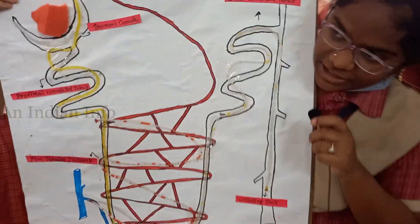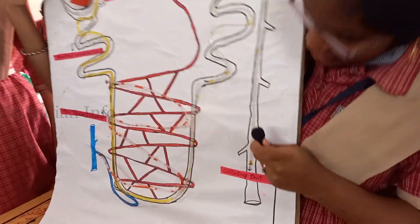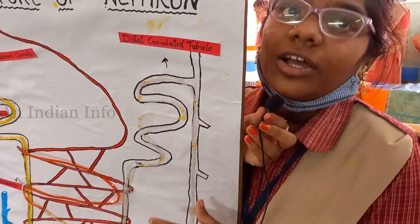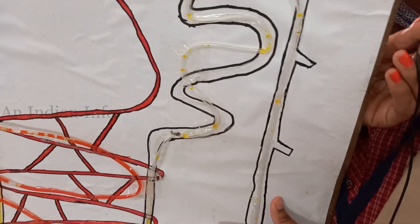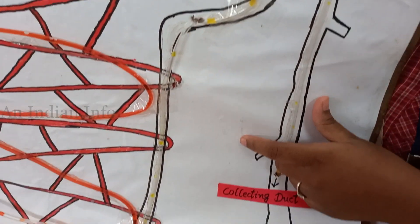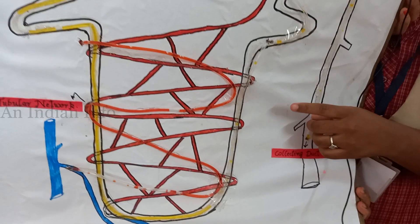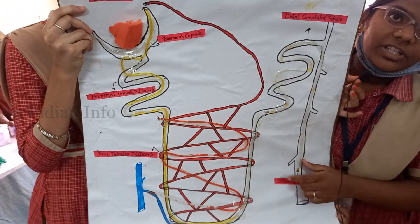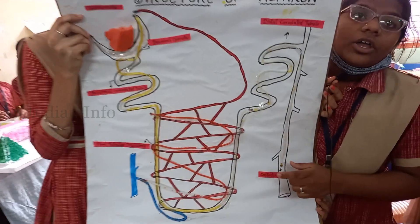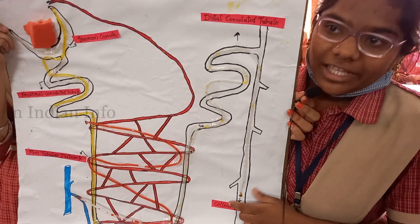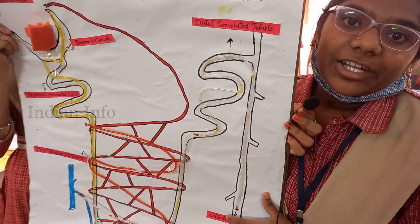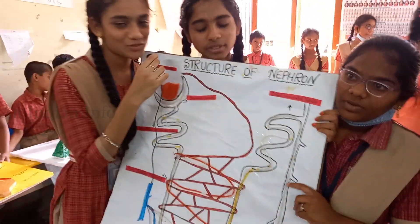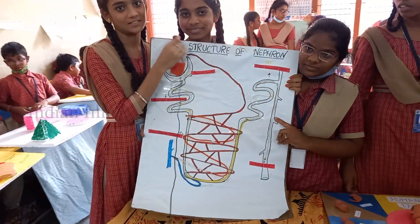Today I am going to explain the structure of nephron DCT. In DCT, the peritubular network secretes excess amounts of salts like sodium, chloride, and waste like urea or uric acid, ammonia etc. And this urine passes into the collecting duct. The collecting duct opens into the pelvis. Pelvis opens into the ureter. Ureter opens into the urinary bladder. The urinary bladder contains 300 to 800 ml of urine. Thank you sir for listening to our experiment carefully and with patience.